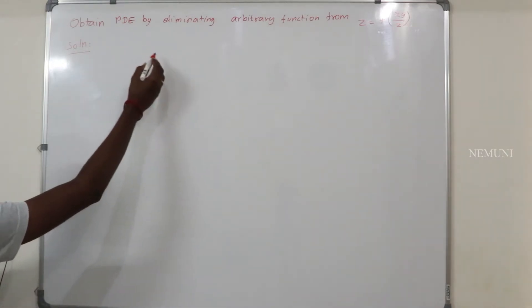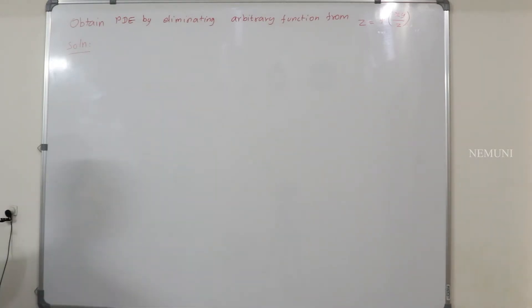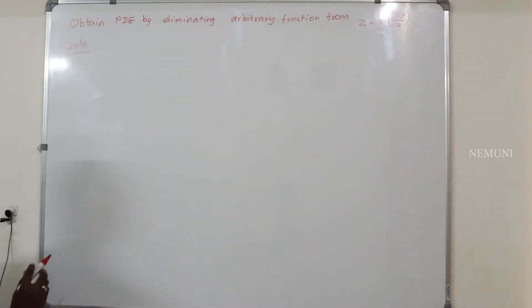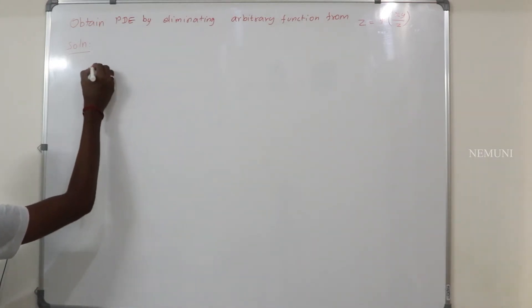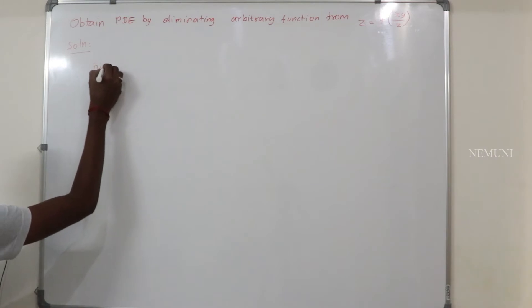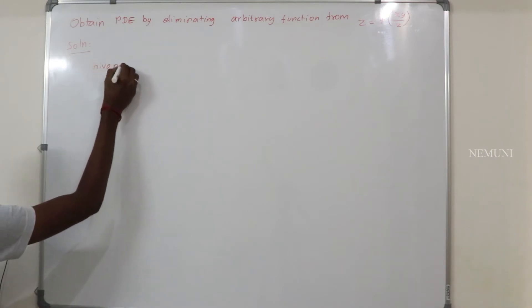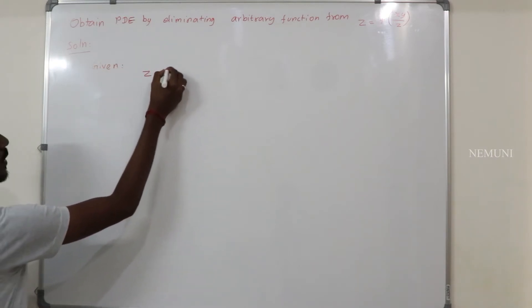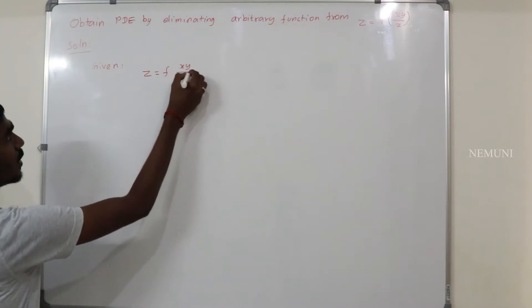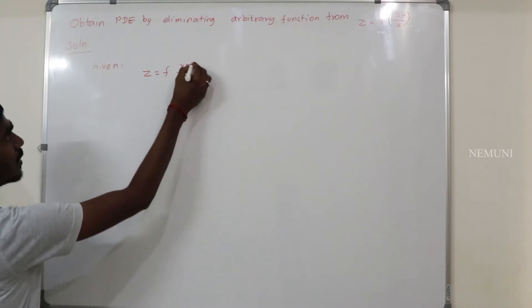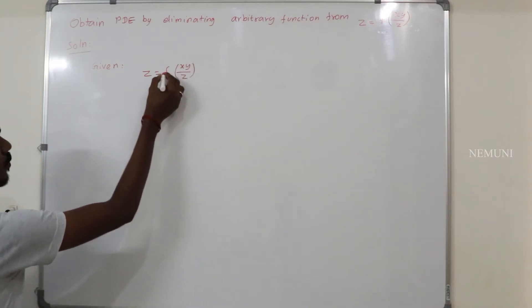Partial Differential Equation by eliminating the arbitrary function from z equal to f of x·y by z. Solution: given z equal to f of x·y by z.